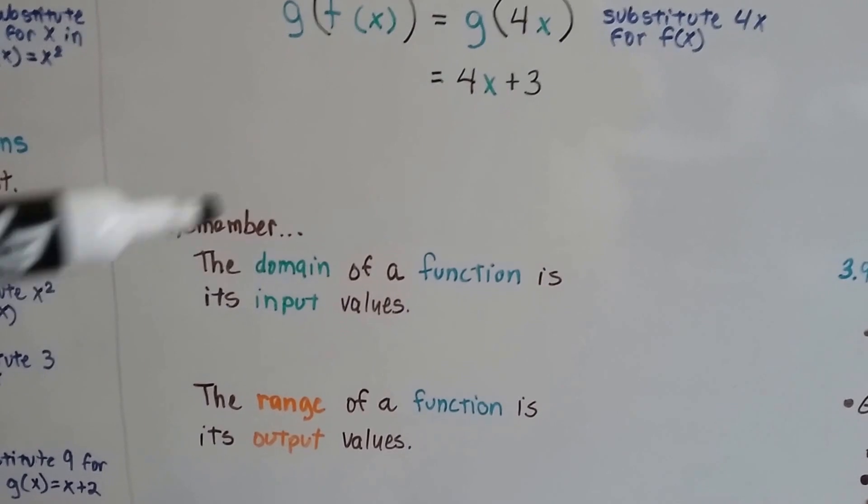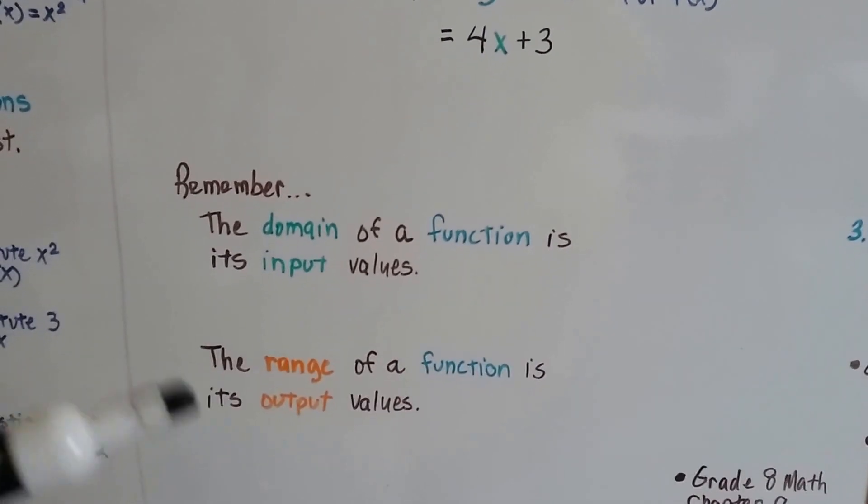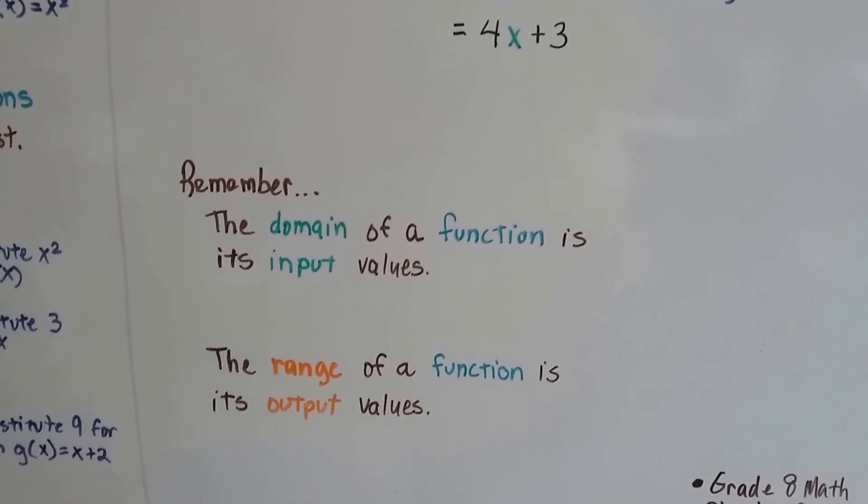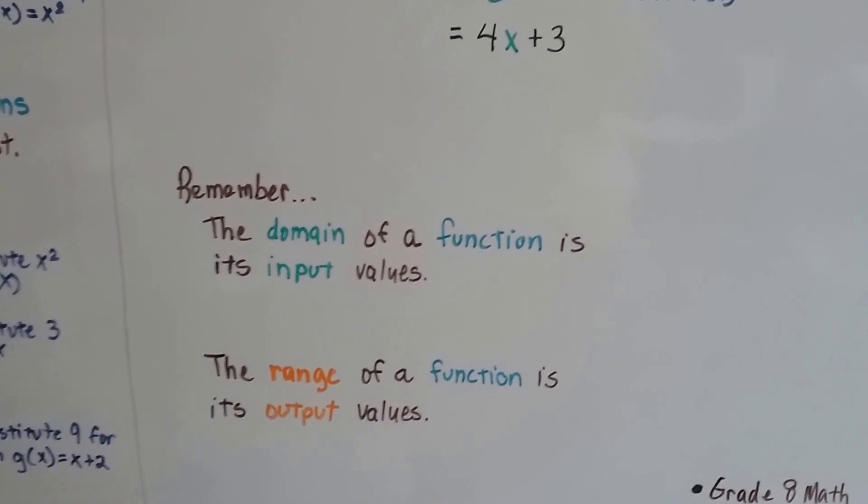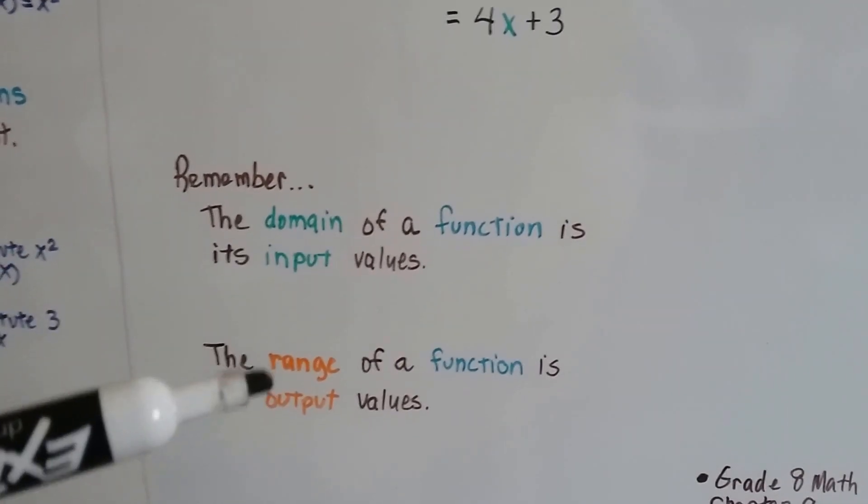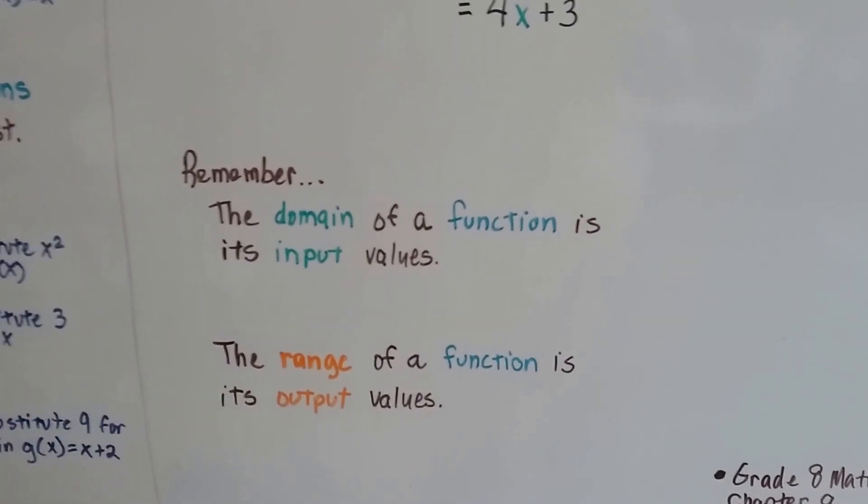So remember the domain of a function is its input values. It's the values we're putting into the function. And the range is the output values. It's what's coming out of the function. Think of the function as just a little math machine. And when you put values into it, it's going to have stuff come out of it. And that's the range in the output.